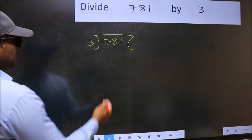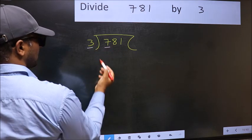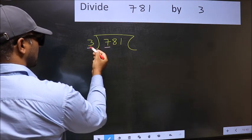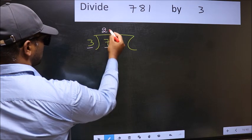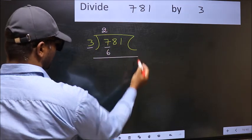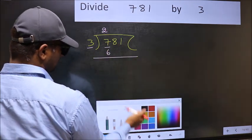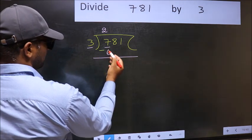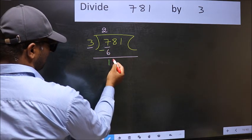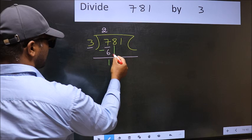Here we have 7 and here 3. A number close to 7 in 3 table is 3×6. Now you should subtract. 7 minus 6, 1. After this, bring down the beside number.